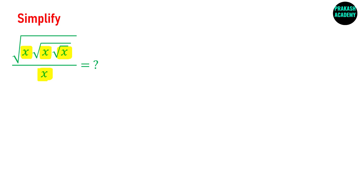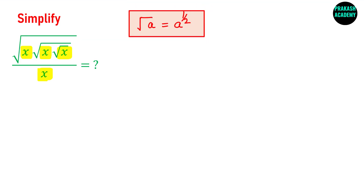To simplify this expression you can use different rules of exponents. One rule is that if you have root a, then this can be written as a raised to the power 1 by 2. Using this rule, the numerator will be root x times root x, and the last root x can be written as x raised to the power 1 by 2.